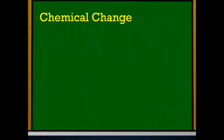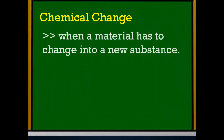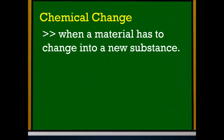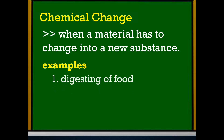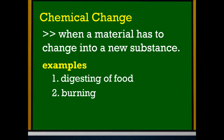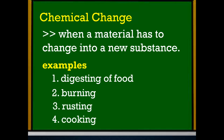For chemical change, matter has to change into a new substance. Examples include digesting of food, burning, rusting, and cooking.